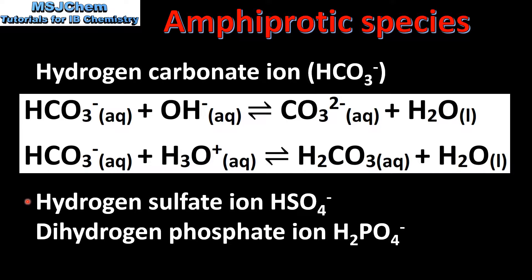Here are two more examples of amphiprotic species: the hydrogen sulfate ion, HSO4⁻, and the dihydrogen phosphate ion, H2PO4⁻. Both these examples can be found on the worksheet accompanying this video.